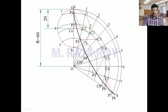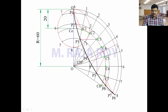Now how to draw the tangent and normal to the hypocycloid at a given point: assume some point somewhere on the curve. From this point, draw an arc onto the locus of centres with the radius of the rolling circle as radius. Somewhere here you get this intersection point. Join this point to the pole O and extend it until it touches the directing circle — this particular point we call M. Draw a line joining M and P — that becomes the normal. If you draw a perpendicular to this normal, that becomes the tangent.